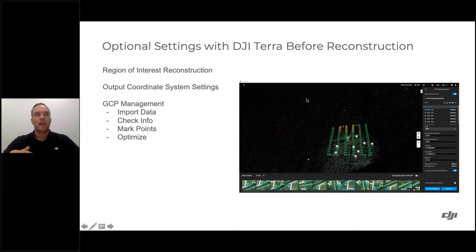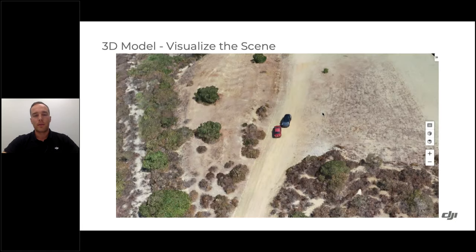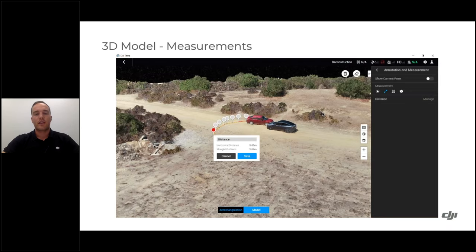After processing — just a few clicks in Terra — you have your photogrammetry output. On the 3D model side, you can visualize the scene, zoom in and out, and navigate around. Measurements such as distance, volume (useful for landslide scenarios), and GPS-referenced point selection are available. You can do this with both 2D maps and 3D models.